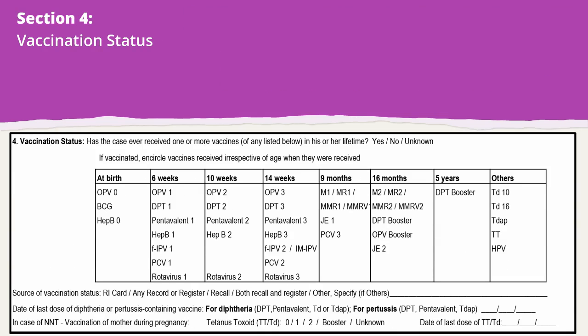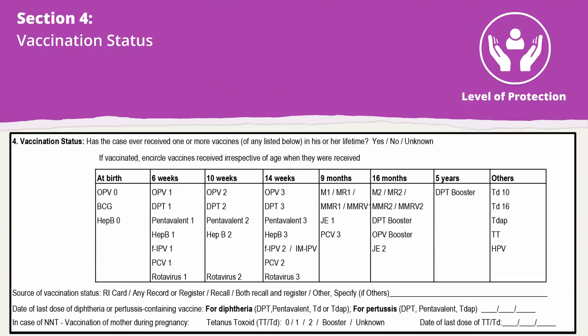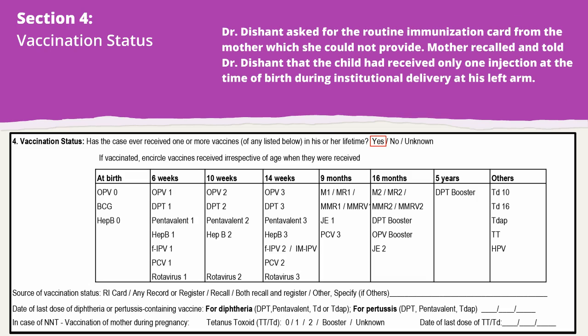Vaccination status is important to understand the level of protection available against the diseases. Encircle the vaccine doses received by the case along with the source of vaccination status. The date of the last dose of diphtheria and pertussis-containing vaccine should be entered. In NNT cases, check the tetanus vaccination status of the mother during the last pregnancy.